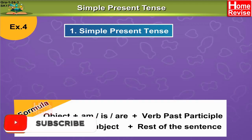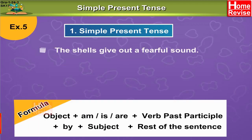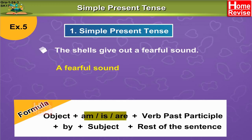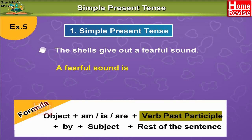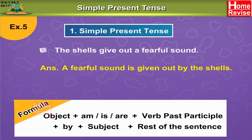Here is one more example for you. The shells give out a fearful sound. What do the shells give out? A fearful sound. So a fearful sound is the object — to be form of the verb is 'is' — past participle is 'given.' So your answer goes something like this: a fearful sound is given out by the shells. Isn't it interesting, children?